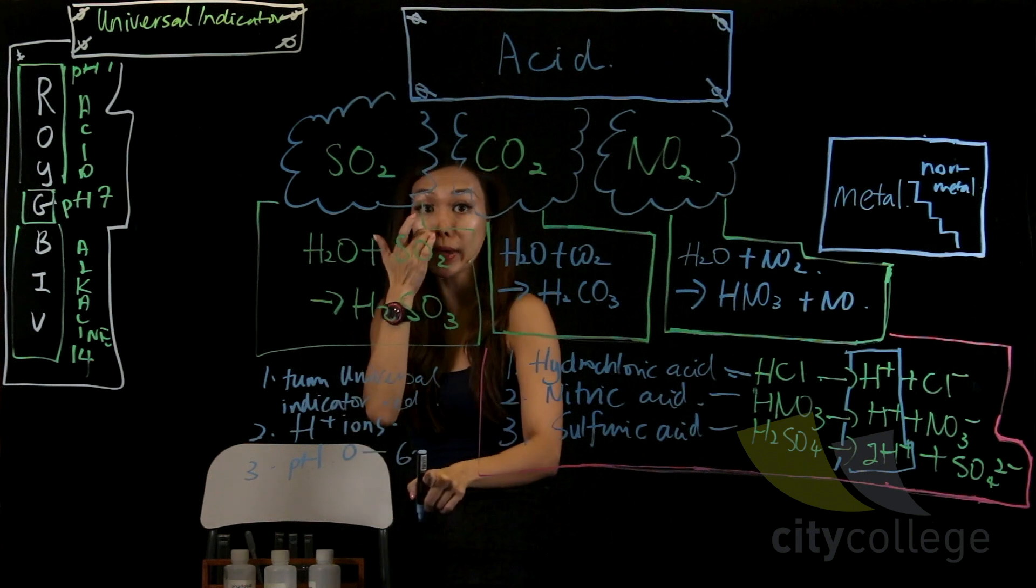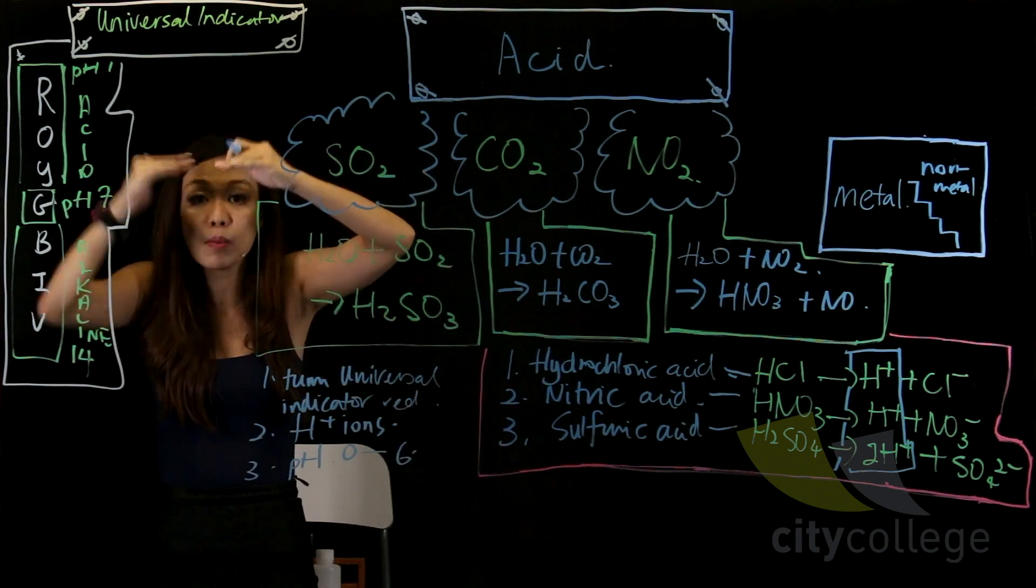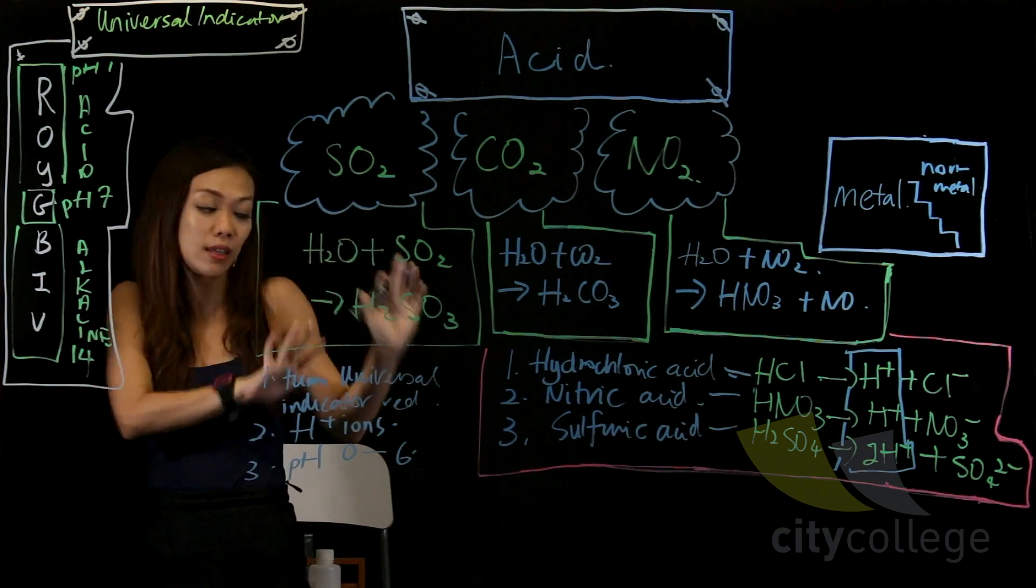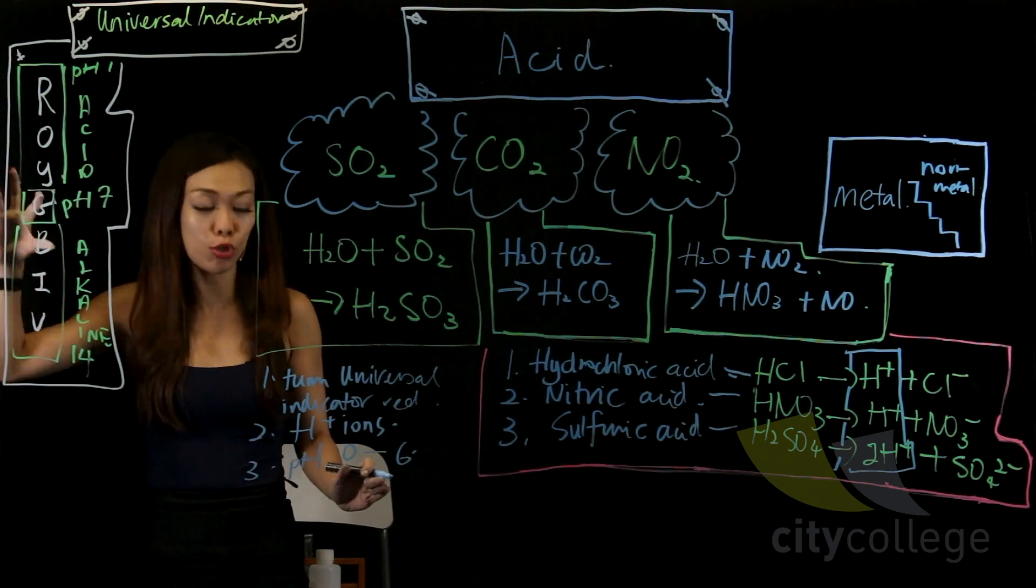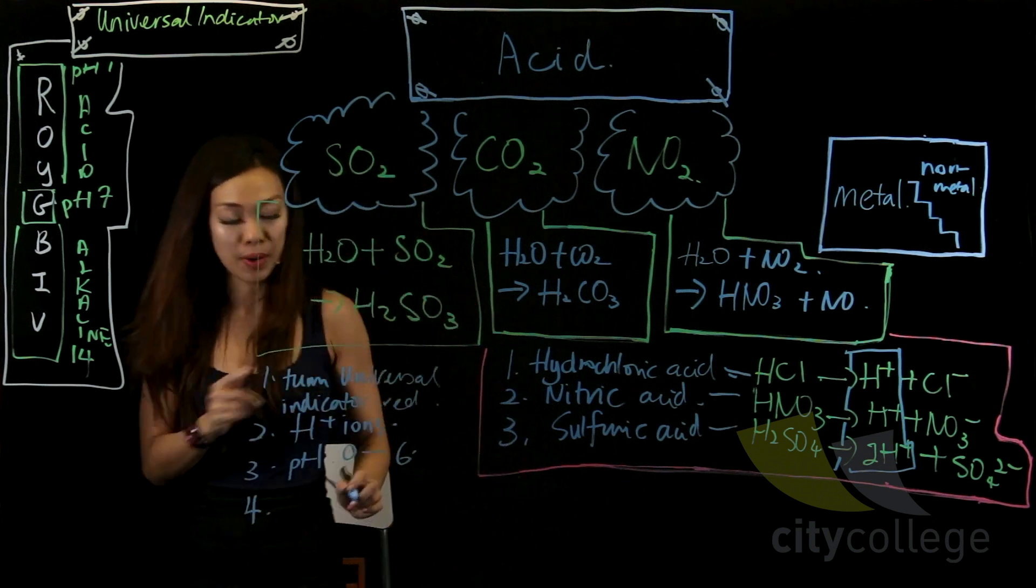I write zero to six. Some of them will give you zero, some of them from one, but it doesn't matter. It is considered as a strong acid if it's zero or one. Six is the weak acid, seven is neutral. Now lastly, it tastes sour.